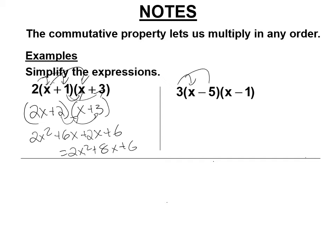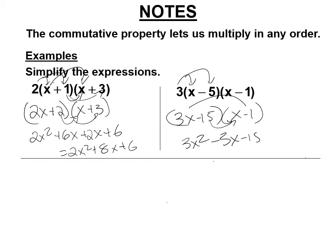I'm going to do 3 times x minus 5, so that's 3x minus 15. Then I multiply that times x minus 1: 3x times x is 3x squared, 3x times negative 1 is negative 3x, negative 15 times x is negative 15x, negative 15 times negative 1 is plus 15. Combining: 3x squared, negative 3x minus 15x is negative 18x, plus 15.